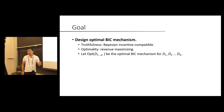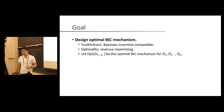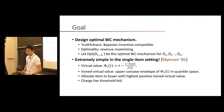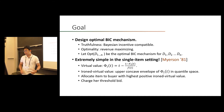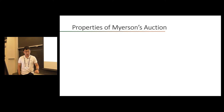Our goal is to design optimal BIC mechanisms, where optimality means revenue maximizing. Let OPT(d1,...,dn) be the optimal BIC mechanism for distributions d1 to dn. By a seminal result by Roger Myerson in 1981, he fully characterized the optimal mechanism for single-item auctions. There is the definition for Myerson's virtual value, and he proved that for any single-item setting, the optimal auction is to sell the item with the highest positive ironed virtual value and charge her the threshold bid.